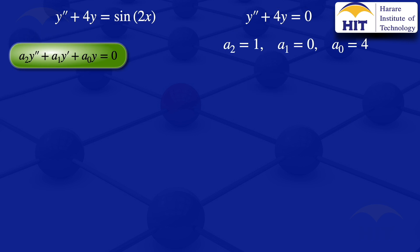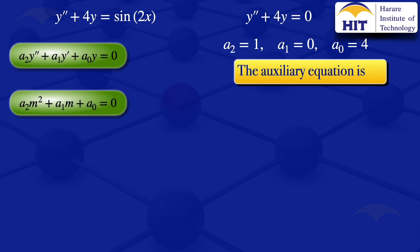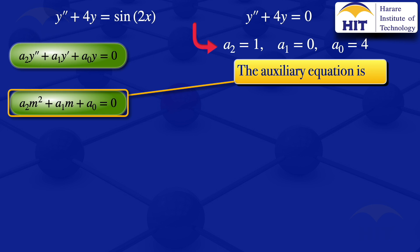To find the general solution of an equation of this form, we have to find the auxiliary equation first. The auxiliary equation is given by a2·m² + a1·m + a0 = 0. Substituting our values of a2, a1, and a0, we have the auxiliary equation m² + 4 = 0.